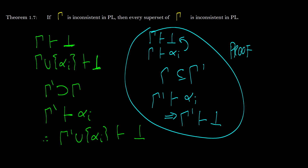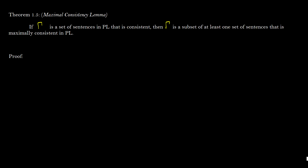Now we know we can go from small to big and big to small. So now we can finally prove that if a set of sentences in PL is consistent, then there's some superset that is maximally consistent. What we need to do is suppose that our maximally consistent set is not consistent. We know that it's maximal, so we're going to assume it's not consistent, and then prove a contradiction — showing that because we have a contradiction, it is in fact consistent.